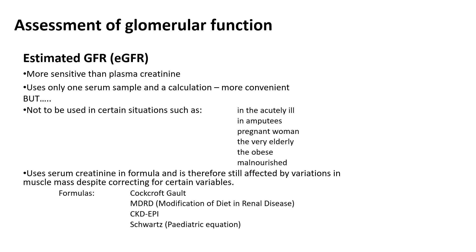The estimated glomerular filtration rate is more sensitive than plasma creatinine and only uses one serum sample in a calculation, which is more convenient. However, it is not to be used in certain situations such as acute illness, amputees, pregnant women, the very elderly, the obese, and the malnourished. It uses a serum creatinine formula and is therefore still affected by variations in muscle mass, despite correcting for certain variables.